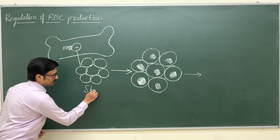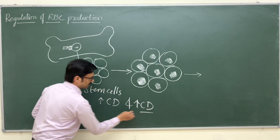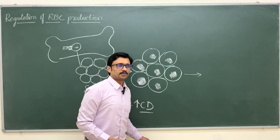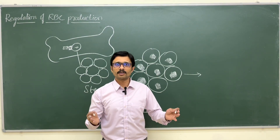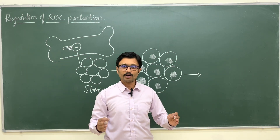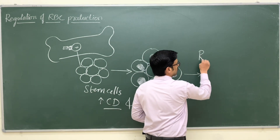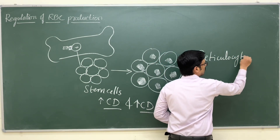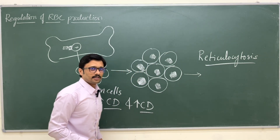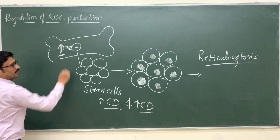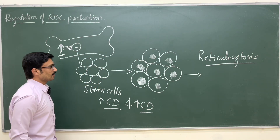Erythropoietin acting on stem cells and precursor cells causes increased cell division and increased cell differentiation, so more RBCs are produced in a shorter period of time. The cell cycle duration is cut short, more cells are replicated, and more differentiation occurs, resulting in increased reticulocytes entering the circulation — reticulocytosis. Whenever erythropoietin secretion is increased, RBC production also increases.